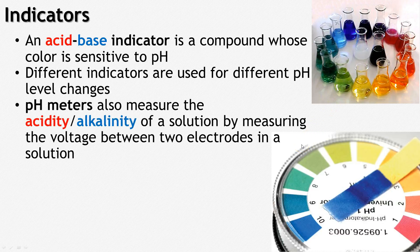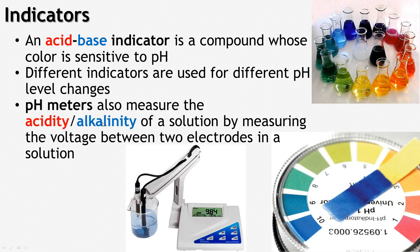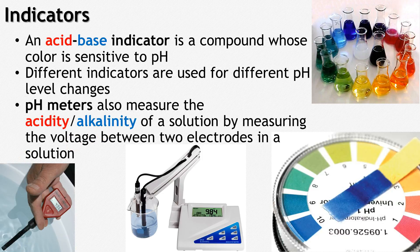Another way we can measure pH is with a pH meter. A pH meter measures the acidity or alkalinity of a solution by measuring the voltage between two electrodes in a solution. This is a fancy one you might see in a lab. Here's also a handheld one that you can use for checking the pH of a pool, so you know where you're at.